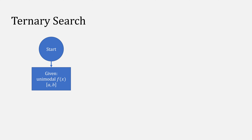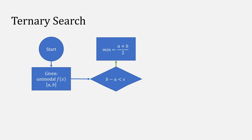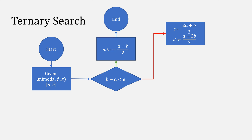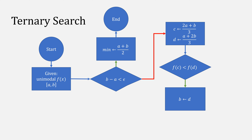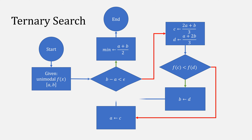Ternary search says: given a unimodal function and an interval a and b where our minimum exists, first check if b minus a is less than some epsilon. If it is, our interval is small enough and you can assume the minimum is (a + b) / 2, or optionally return the actual interval, then stop. When it isn't, let c be the point at the first third of the interval and d be the point at the second third. Then check if f(c) is less than f(d). When it is, assign d to b. When it isn't, assign c to a. Then repeat the process.